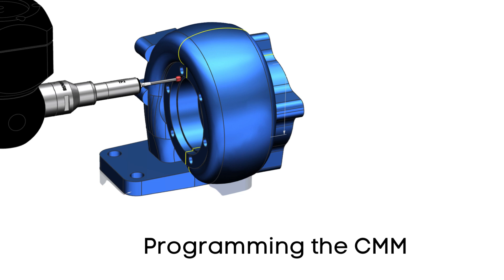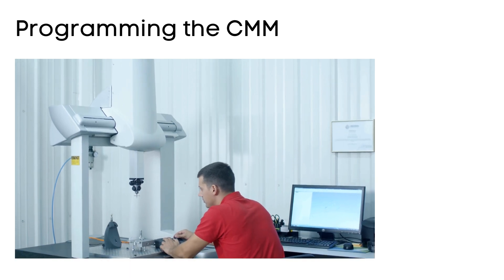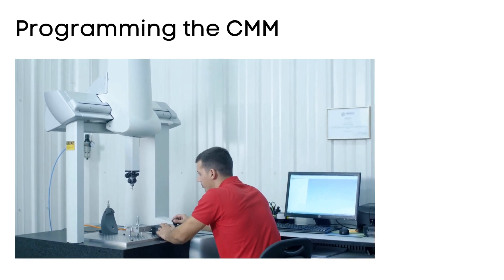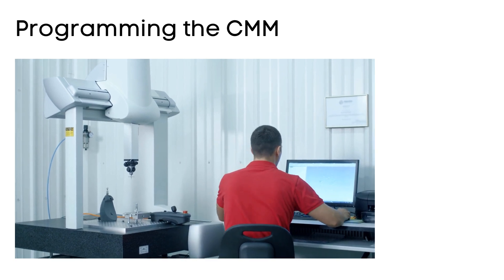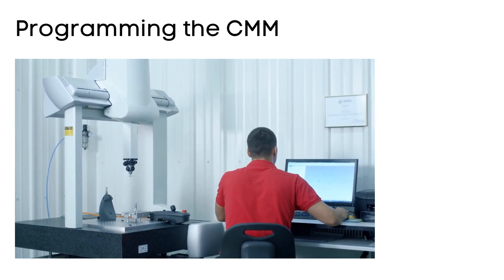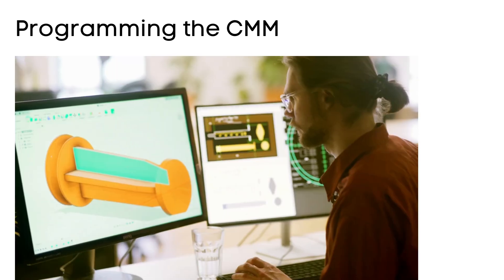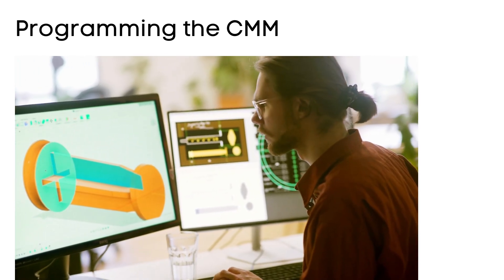Programming a CMM at the basic level involves the use of a joystick to instruct the machine on the route to take to touch the probe around the workpiece. This programming can be carried out offline, making use of a CAD model.